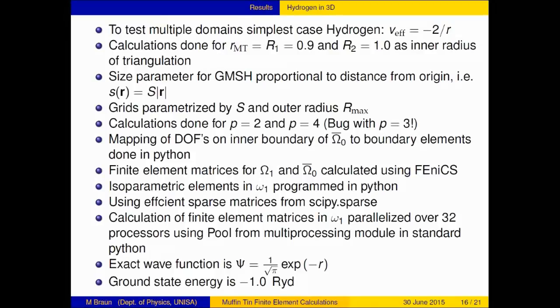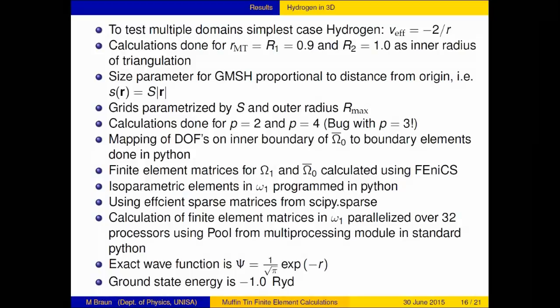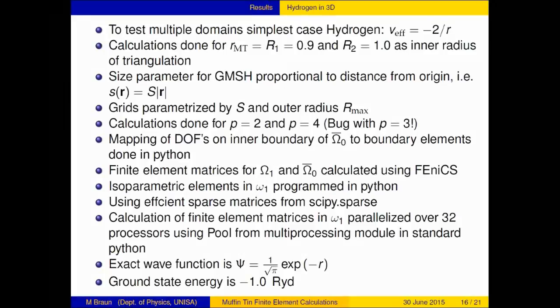I have done these calculations for P equals 2 and P equals 4. Unfortunately, with my boundary elements for P equals 3, there is still a problem. The mapping of the degrees of freedom I did in Python. Omega 1 and omega 0 bar I could do in FEniCS. The isoparametric elements in omega 1 were programmed in Python using sparse matrices. I parallelized the calculation for the boundary elements using 42 processors with multiprocessing pool.